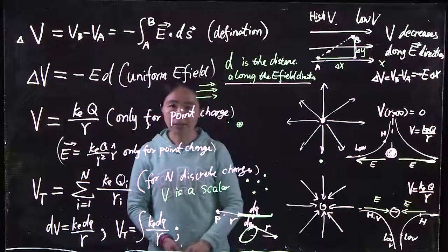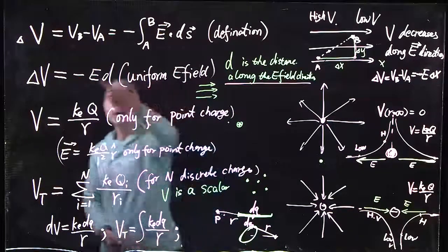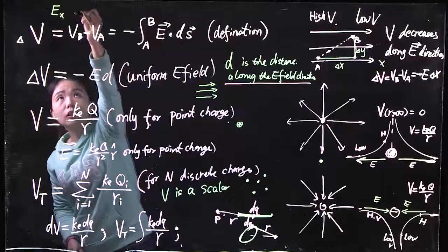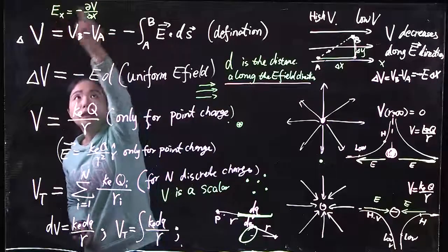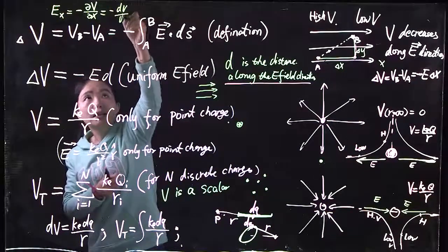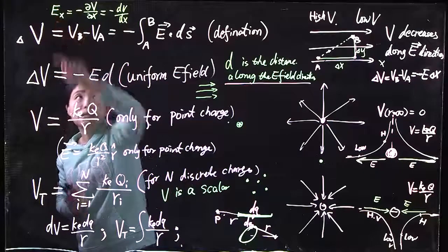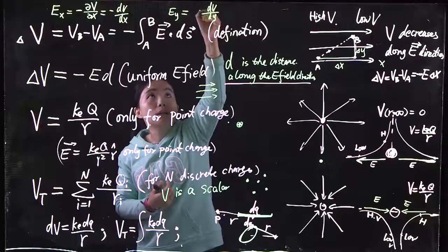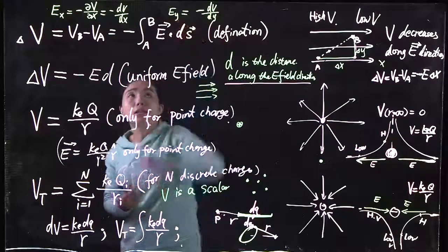Once you have your potential, the reverse equation gives you the E field. The E field in the X direction equals negative dV/dx — integrating the E field over distance gives you the potential, and conversely, the derivative of potential with respect to position gives you the E field. If the potential is changing in the Y direction, the slope dV/dy tells you how fast the potential changes in Y, and that determines how strong the E field is in the Y direction.